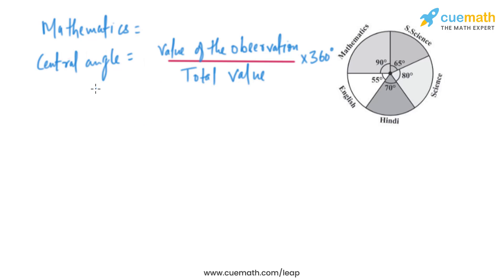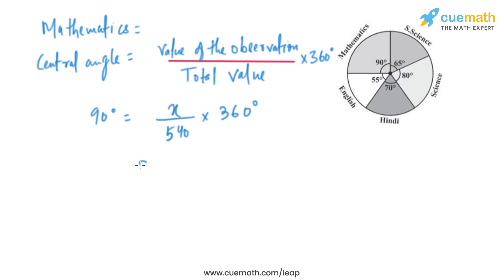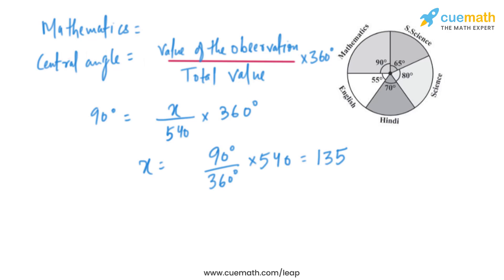Let's start with Mathematics. The formula to find marks from a central angle is: value of the observation divided by total value, multiplied by 360 degrees. The central angle for Mathematics is 90 degrees. So, x divided by 540, multiplied by 360 equals 90 degrees. Solving this, x equals 90 divided by 360, multiplied by 540, giving us 135 marks in Mathematics.